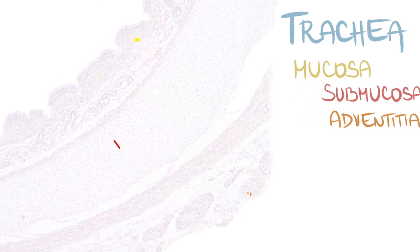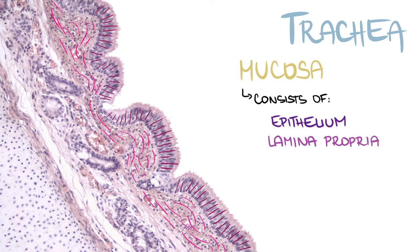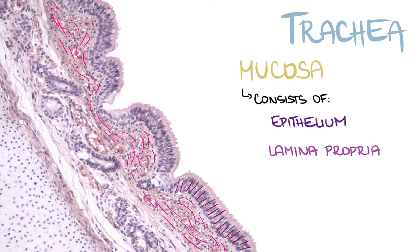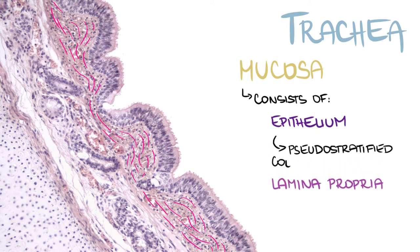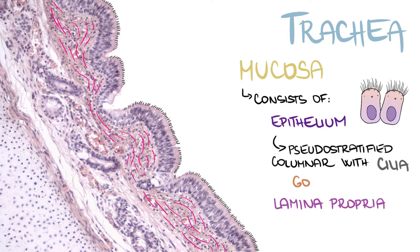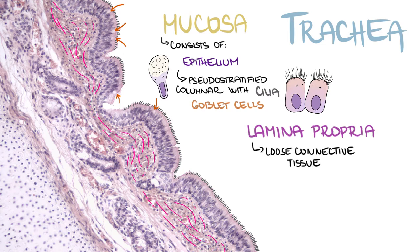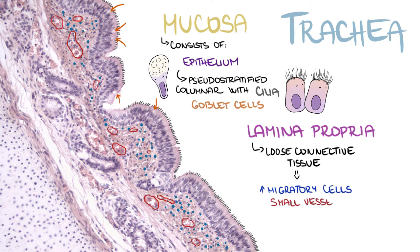Mucosa consists of epithelium and lamina propria. The trachea is lined with a typical airway epithelium, which is pseudostratified columnar epithelium with cilia. We can also find many goblet cells here. Lamina propria is made up of loose connective tissue and contains many migratory cells, small vessels, and ducts of seromucous glands producing watery mucus.